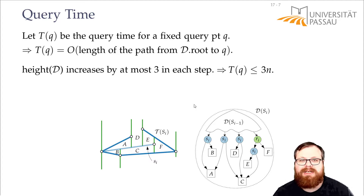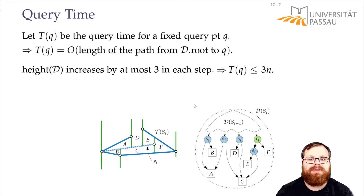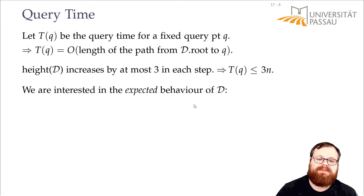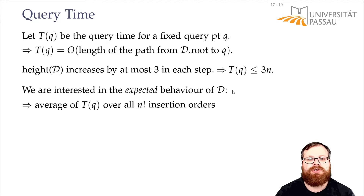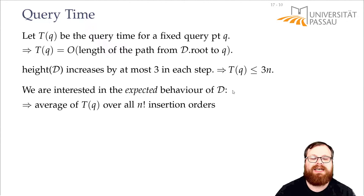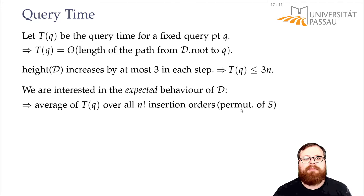So it's at most linear, but linear is not enough for us. We want O(log n) and we want to show expected running time of O(log n). So we want the expected behavior — we want to average the query time over all n factorial insertion orders, which are just the permutations of these n segments. That's a bit much to analyze, so we want to use our trick from the one-dimensional case again.